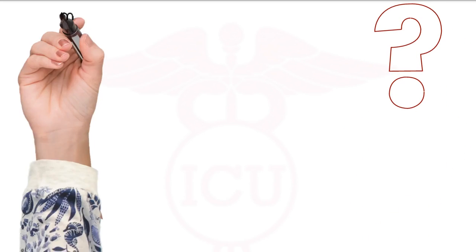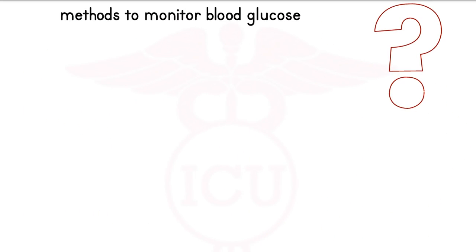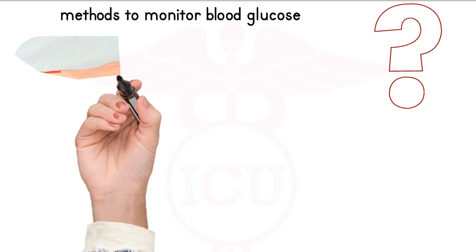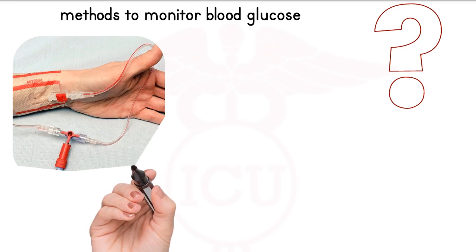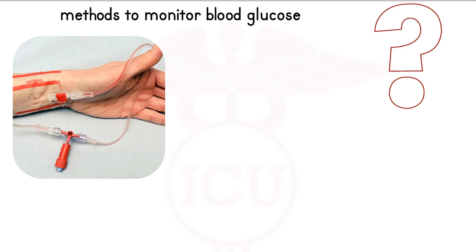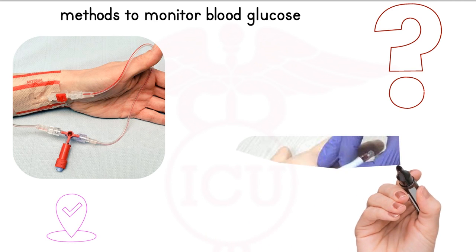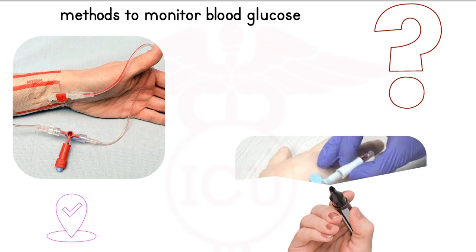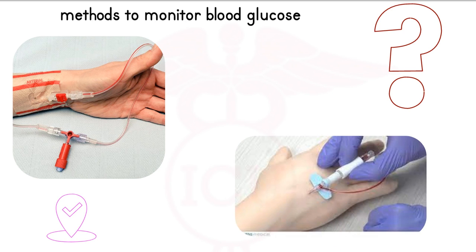Which method is recommended to monitor blood glucose in critically ill patients? If an arterial catheter is available, arterial blood is preferred to monitor blood glucose in critically ill patients. If no arterial catheter is available, it is recommended that blood samples should be taken from a venous catheter.